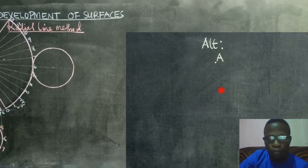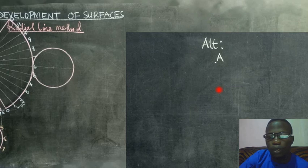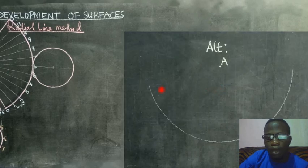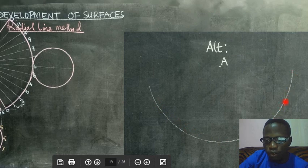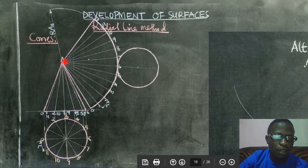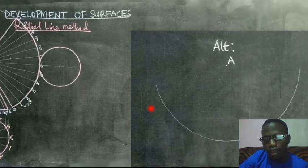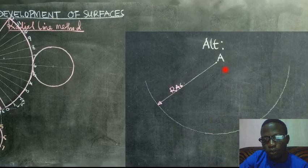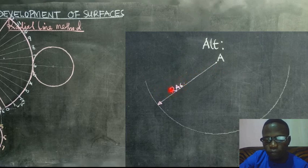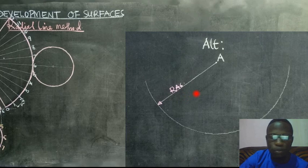So we start by drawing an arc as you can see it here. We draw the arc and this arc is having the radius of the slanting edge of the cone you have. Having drawn that you can see I've demonstrated it here. You can see I've demonstrated it here that the radius is equal to R is equal to R a 6.